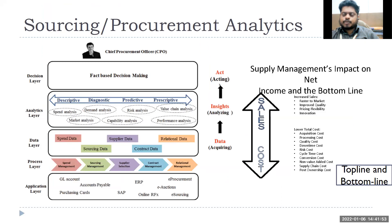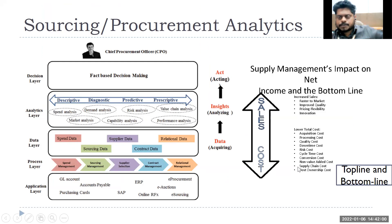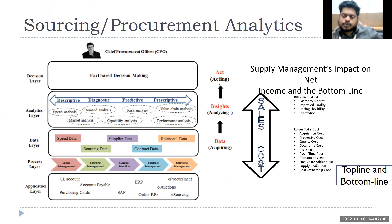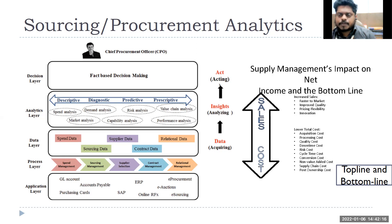Sourcing and procurement analytics is today's discussion. I hope all of you are clear on top line and bottom line. Top line is the revenue — how much money a company is earning. Bottom line is how much is going into cost and whether you can optimize or minimize that. Basically, bottom line is the profit after all costs.